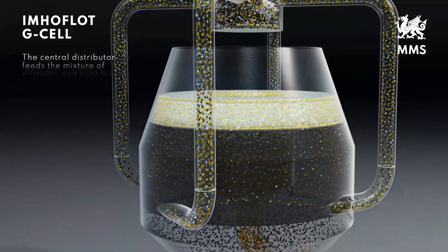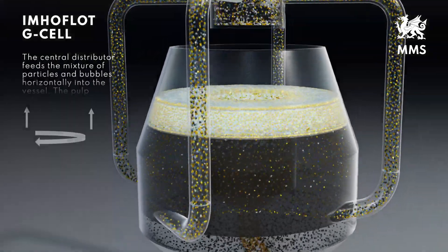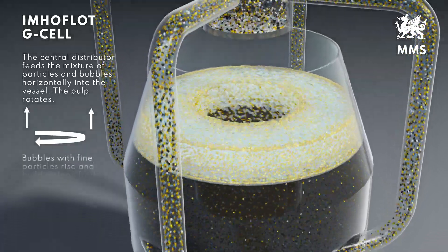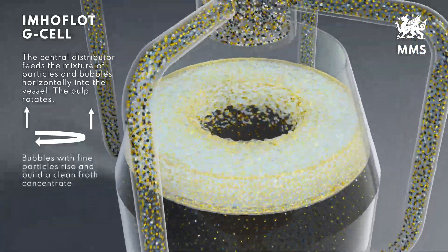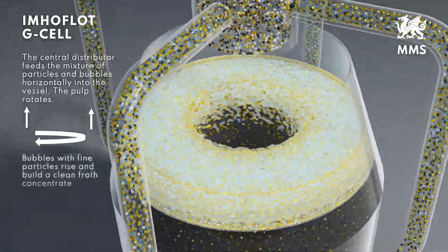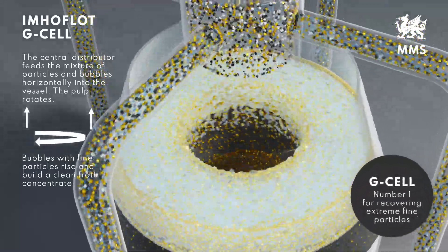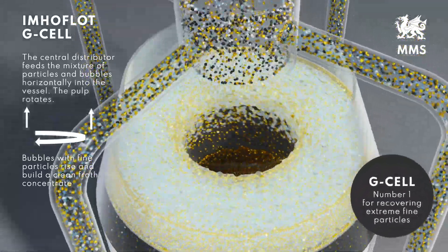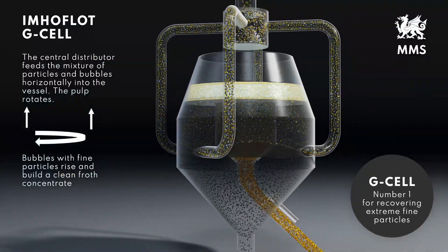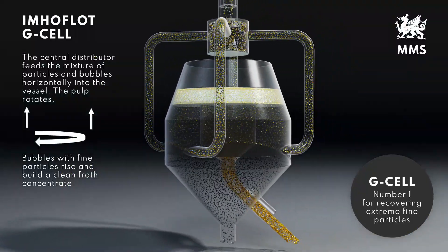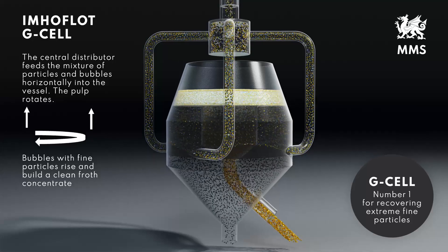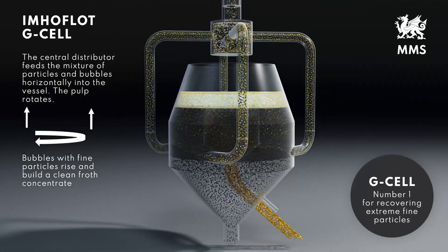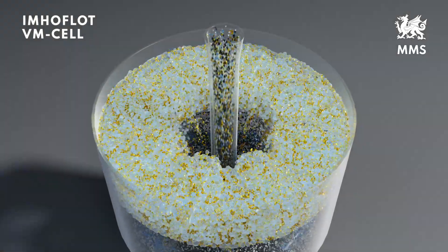The G-cell separator is for the extraction of valuable minerals from finely ground ores and for very fine valuables primarily lost in flotation tailings. The feed into the G-cell is tangential; the aerated pulp rotates slowly, the bubbles rise due to buoyancy, gangue particles sink due to gravity, and minimized turbulence enables a high-grade concentrate.